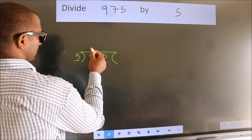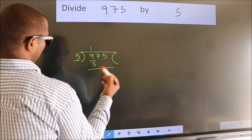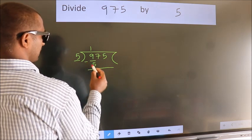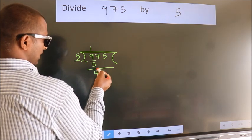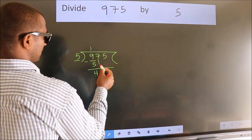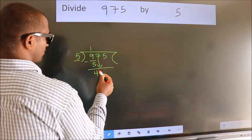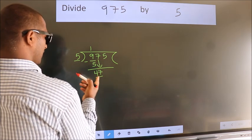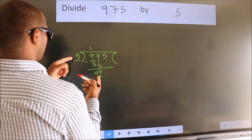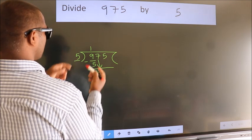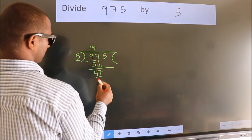Now we subtract and get 4. After this, bring down the beside number, so 7 comes down, making 47. A number close to 47 in the five table is five nines, which equals 45.